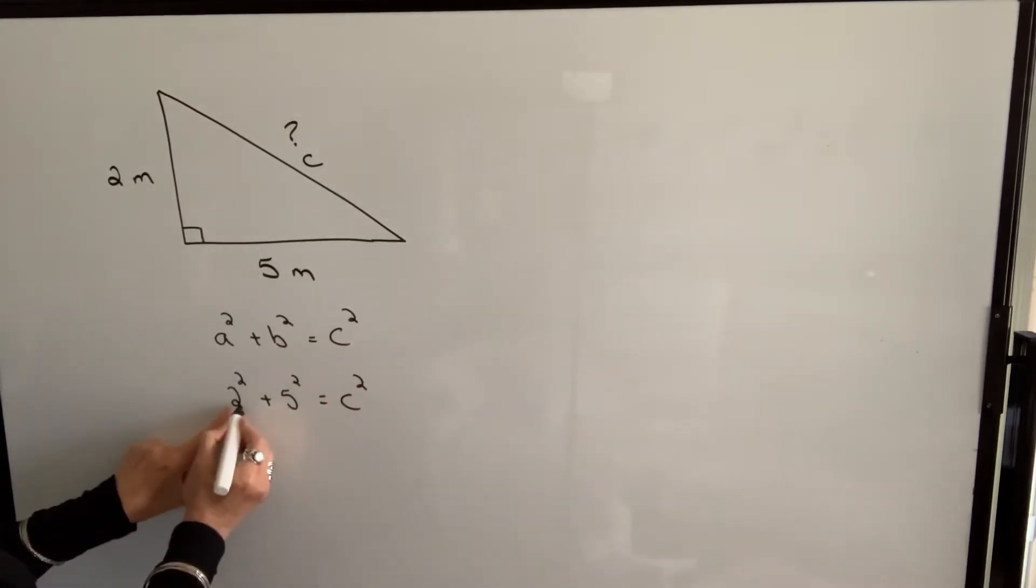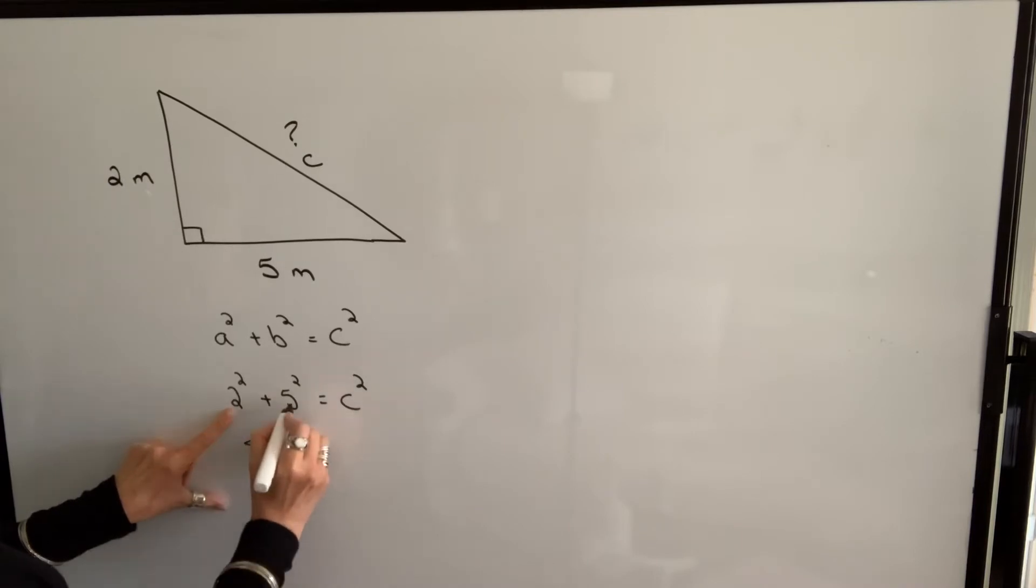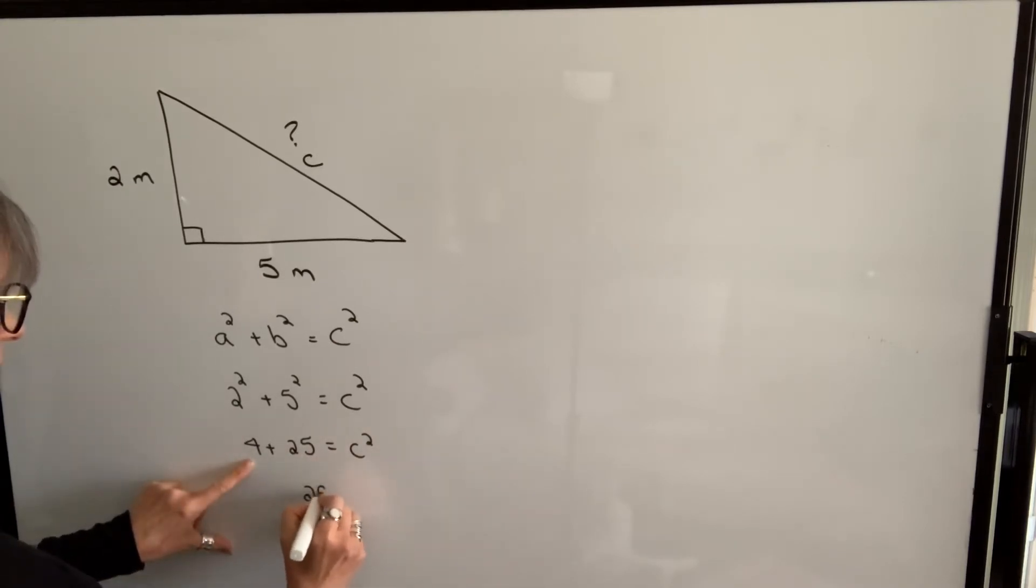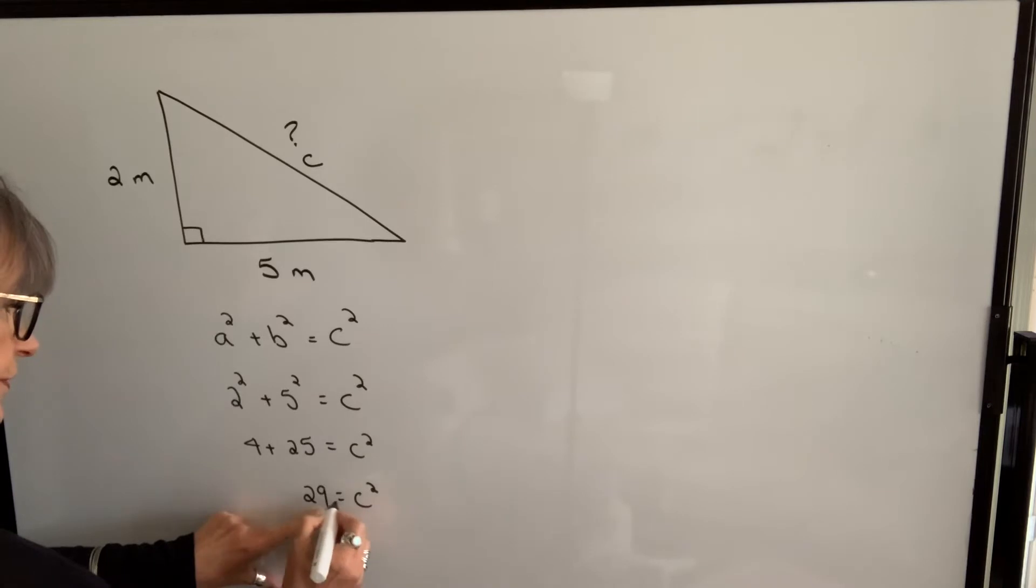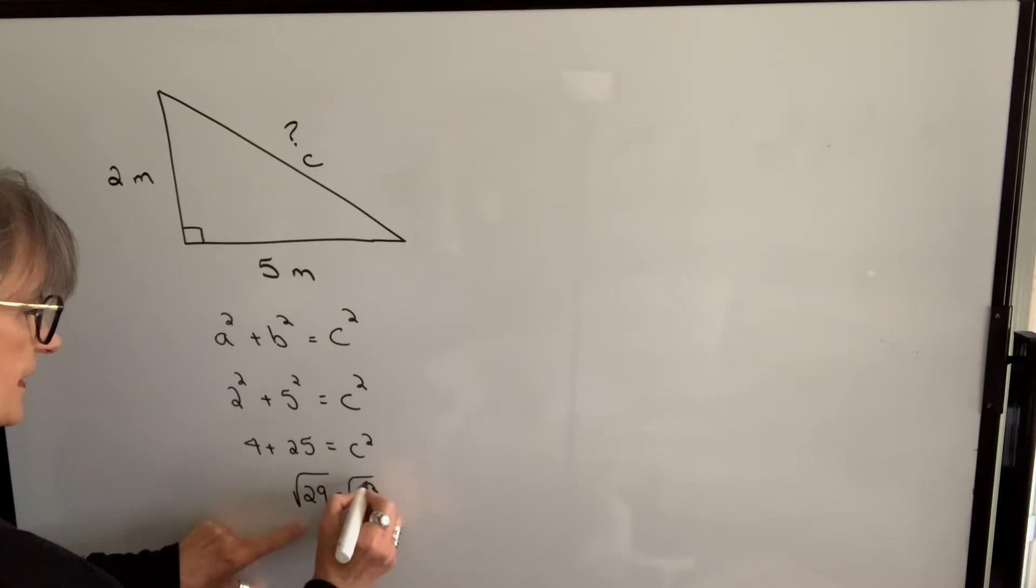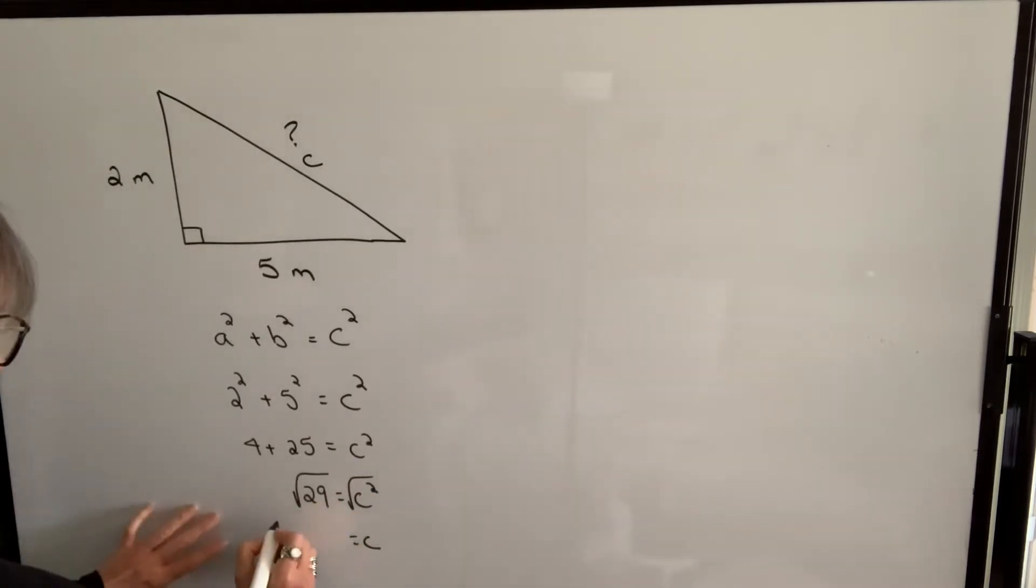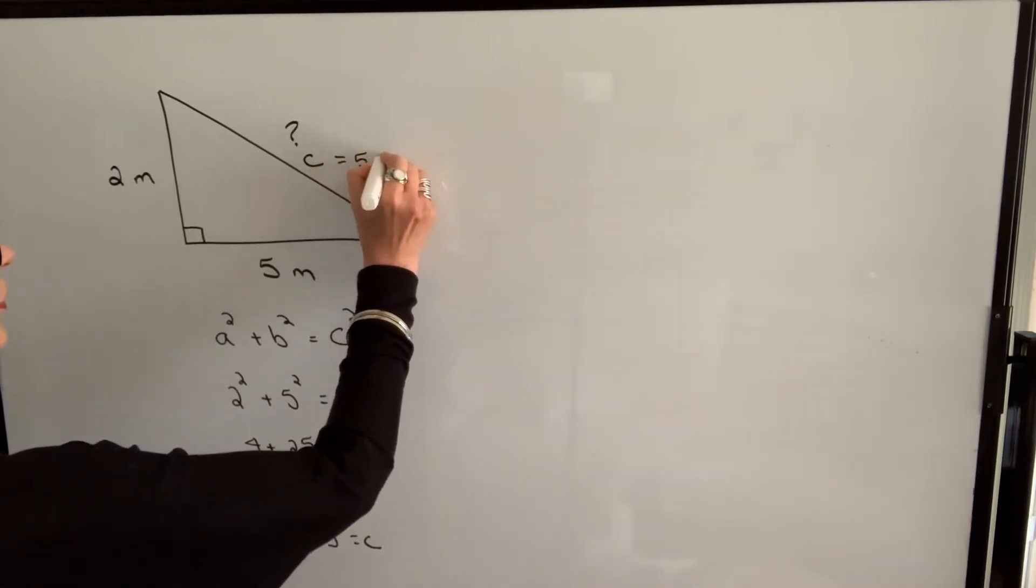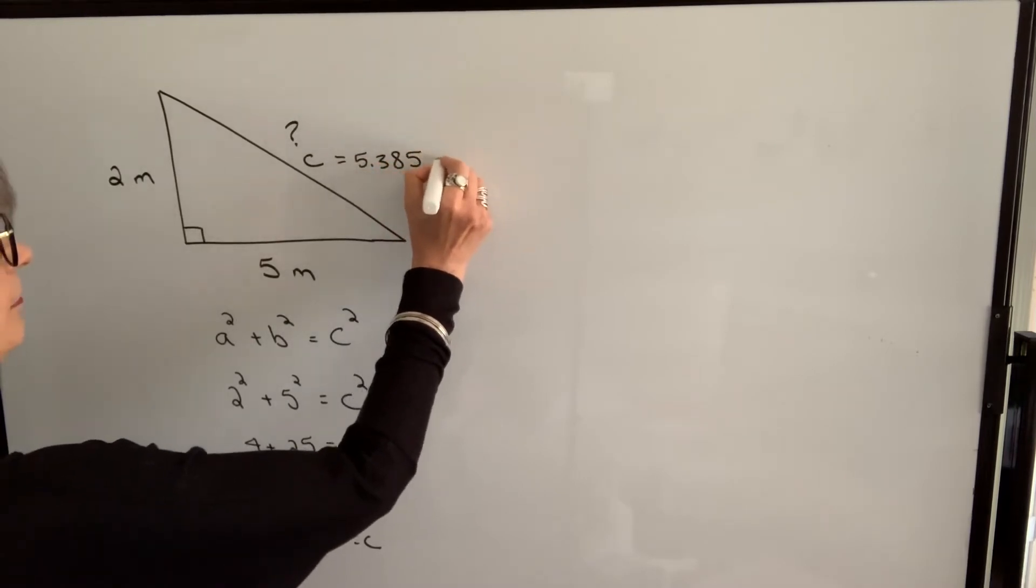First of all, I'm going to square 2 and get 4. I'm going to square 5 and get 25. I add those two amounts up. I get 29 will equal c squared. And in order to solve for c, I take the square root of both sides. When I take the square root of c squared, that just gives me c. And when I take the square root of 29, I get 5.385. So c will be equal to 5.385 meters.